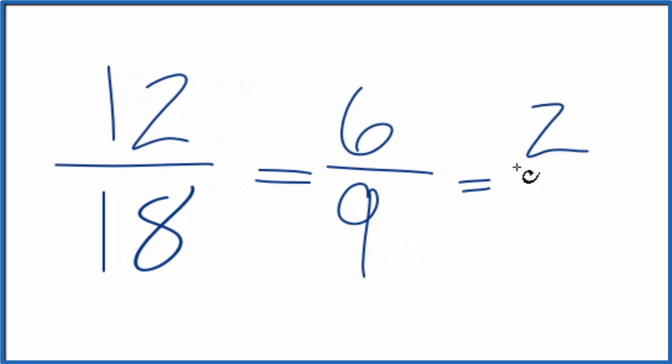3 goes into 6 two times, 3 goes into 9 three times. So we end up with the same fraction. This might make it simpler if you're not sure of your multiplication factors here for 12/18.